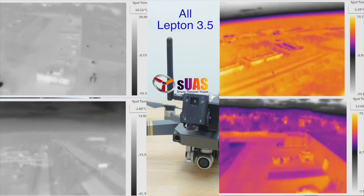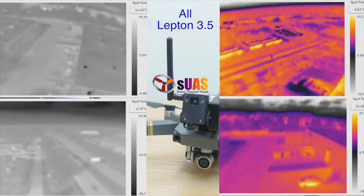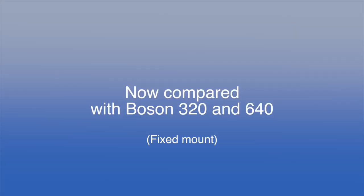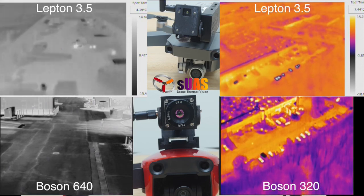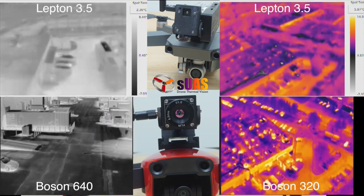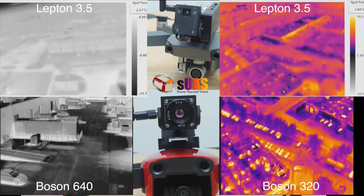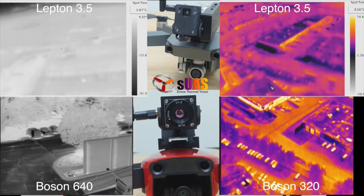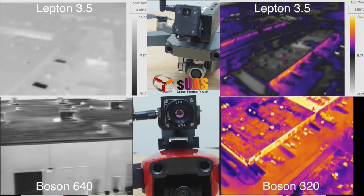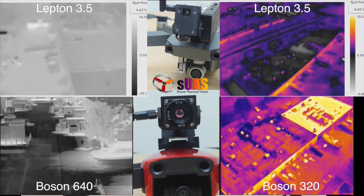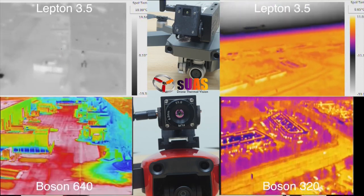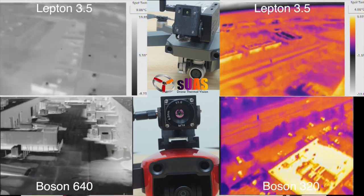But sometimes the contrast might be an issue, like the ones on the left side. And now we provide a comparison with the VUIR Boson 220 and 640 in similar situations and scenes. You can see the Boson offers much more detail and contrast. But sometimes you can see it's a little bit comparable between the VUIR Lepton and Boson, for example, the two on the right side.